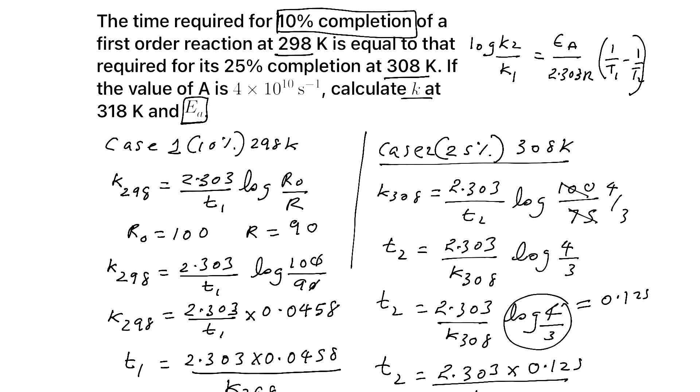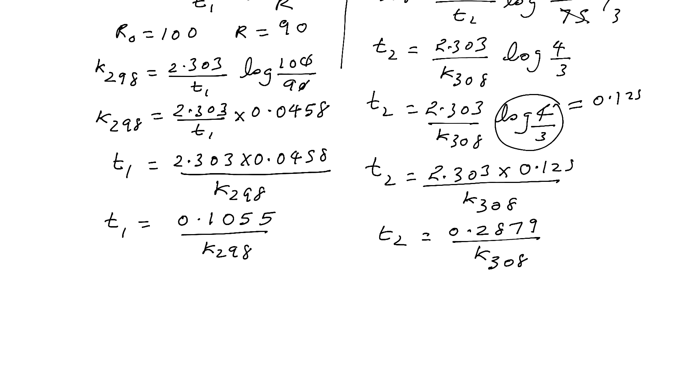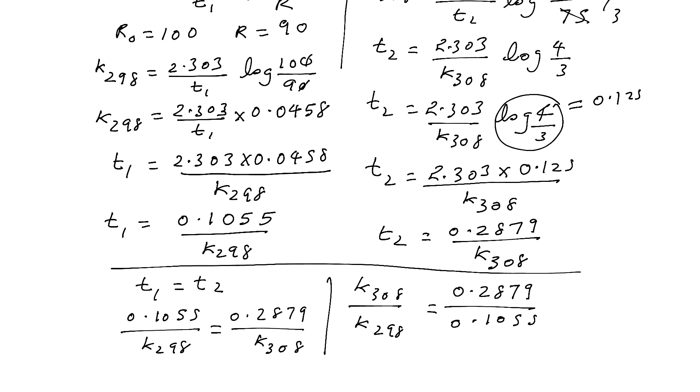See, as per the question, these two times are same. The time required for 10% completion at this temperature is equal to time required for 25% completion at 308 Kelvin. So t1 and t2 are equal as per the question. So equate t1 equal to t2. As per the question, t1 equal to t2. So you can write 0.1055 by k298 is equal to 0.2879 by k at 308 Kelvin. So you can write k308 by k298 is equal to 0.2879 by 0.1055. On dividing, you will get 2.7289. So we got the ratio of k2 by k1.